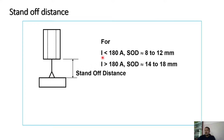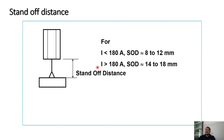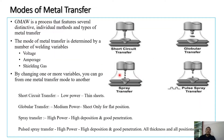Empirically, for current below 180 A, a stick-out distance of 8–12 mm is recommended. For current greater than 180 A, a stick-out distance of 14–18 mm is used. These are guide values established from extensive industrial trials.